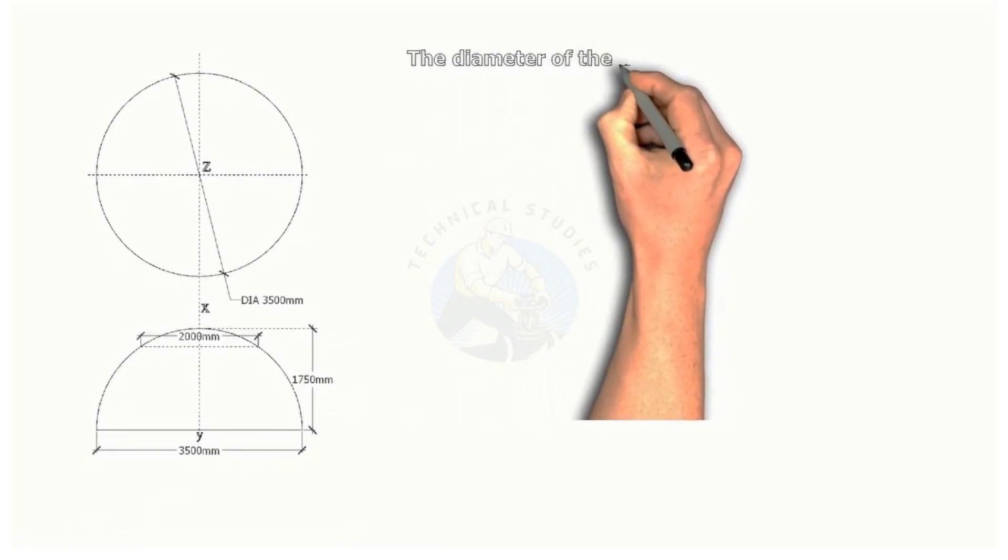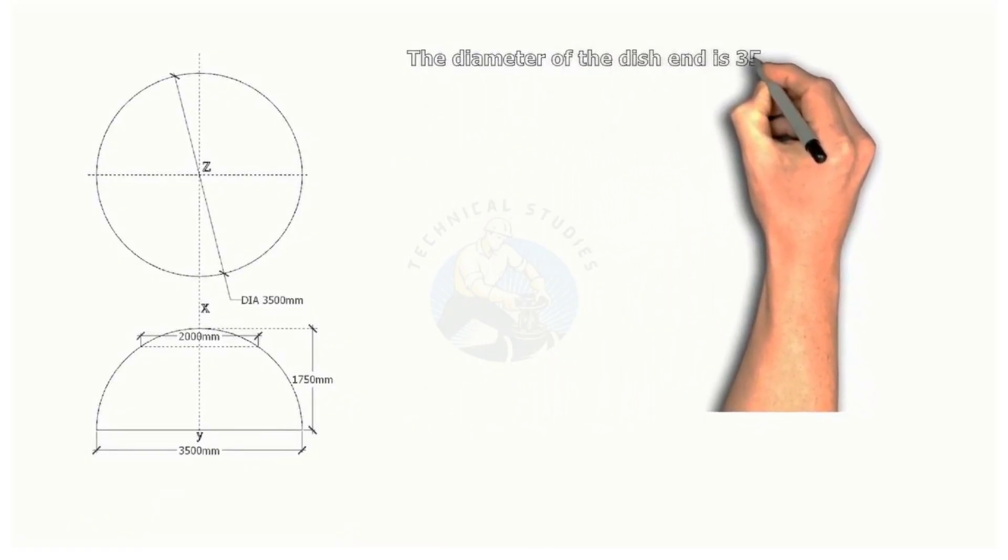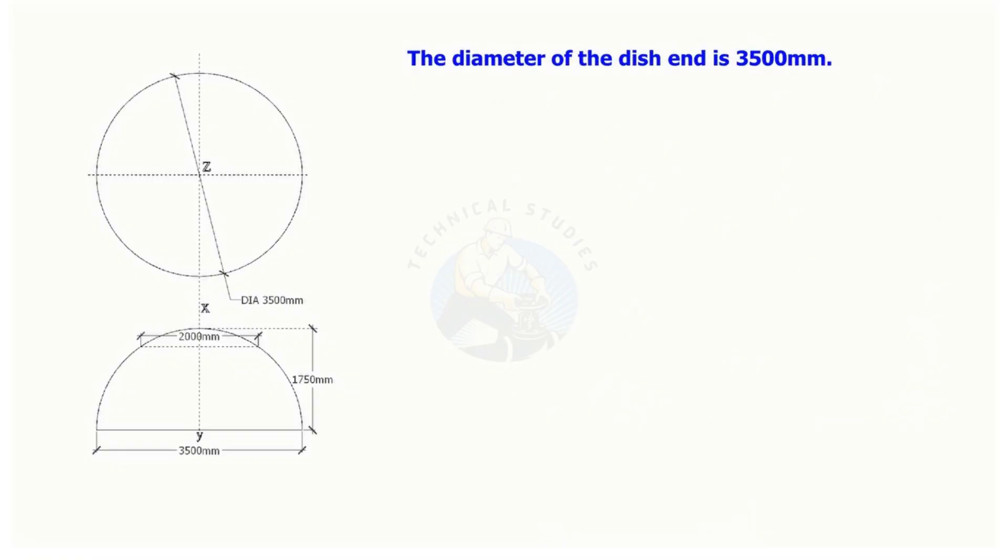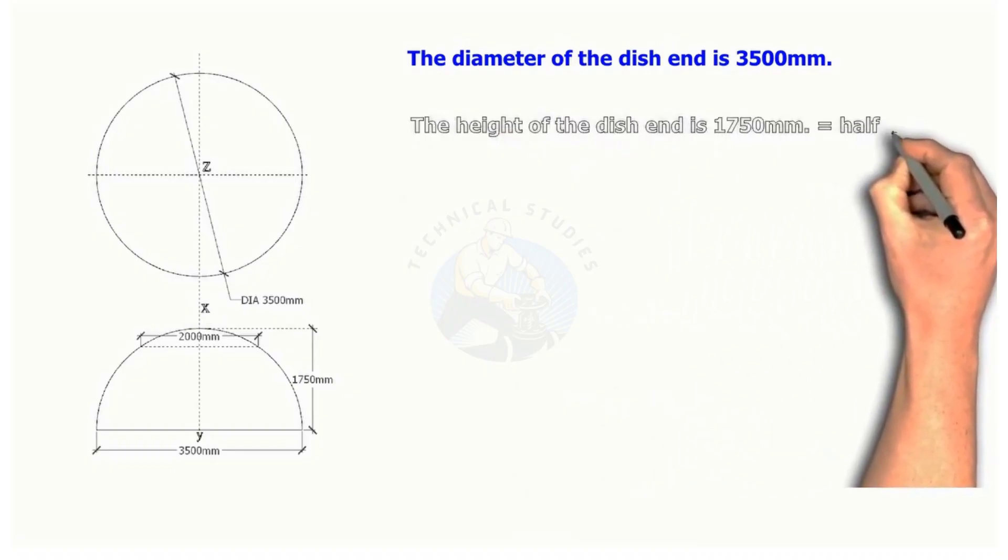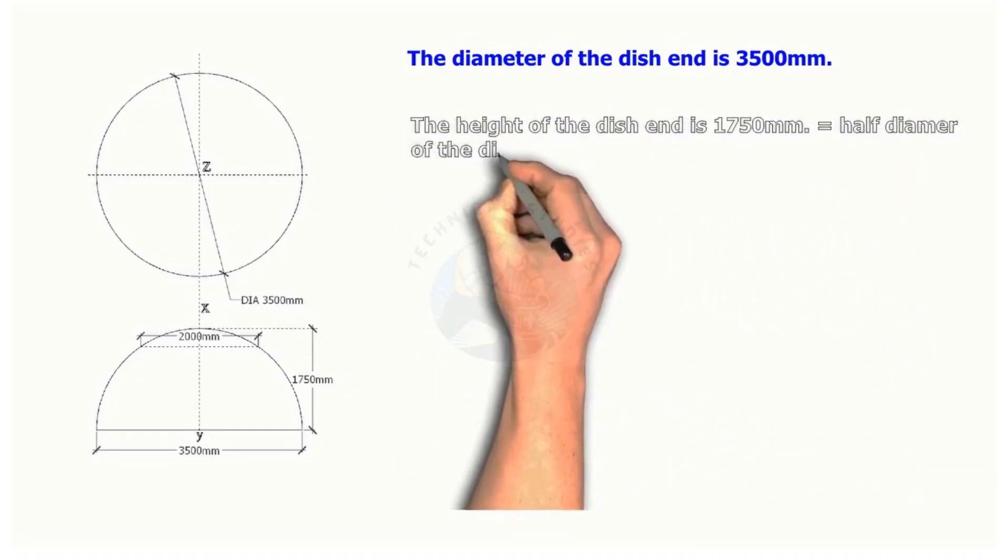Assume that the dish end's diameter is 3,500 millimeters. The dish end will have a height of 1,750 millimeters, which is equal to half of its diameter.